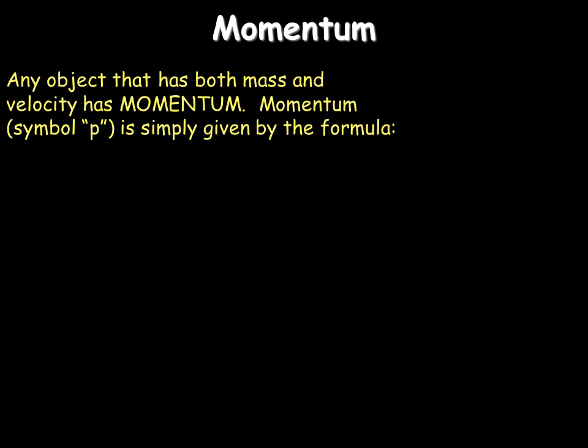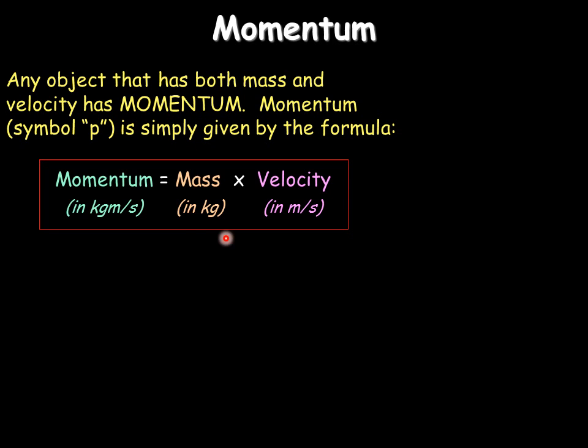Momentum is a concept which is both on the higher and the foundation papers. And it takes into consideration the mass of a moving object and also the velocity it has. The bigger the mass, the bigger the velocity, the larger the momentum. So the equation is quite simple, straightforward. You multiply the mass in kilograms by the velocity, and it gets this thing called momentum. The units being kilogram meters per second, which is mass times velocity. And in a triangle, to rearrange it, you would put it in this triangle here.